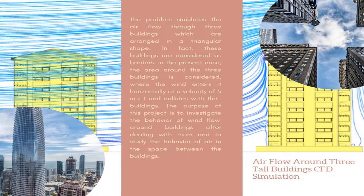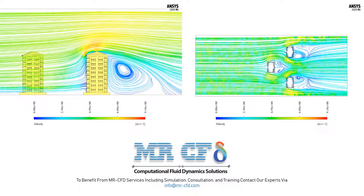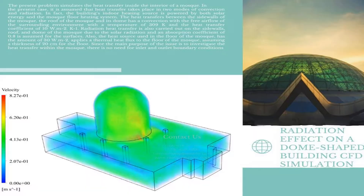Then we examine the airflow around three tall buildings CFD simulation. The problem simulates the airflow through three buildings which are arranged in a triangular shape, considered as barriers. The area around the three buildings is considered where the wind enters horizontally at a velocity of 5 meters per second and collides with the buildings. The purpose of this project is to investigate the behavior of wind flow around the buildings and the air behavior in the space between them.